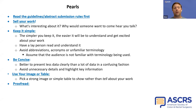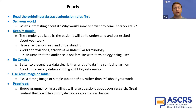Proofread. You want to proofread your abstract until it is coherent and perfect. Take the time to proofread your abstract for any grammatical errors, typos, or unclear statements. Ensure that the abstract is coherent and flows smoothly. Sloppy grammar or misspellings will raise questions about your research. Great content that is written poorly decreases acceptance chances.